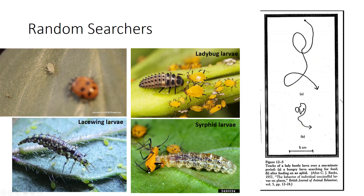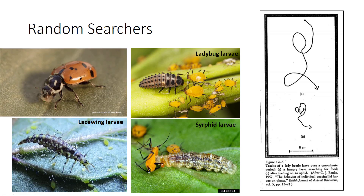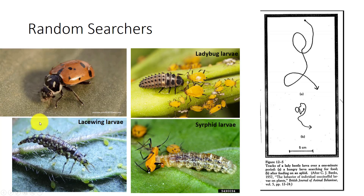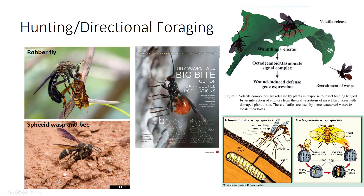Random searchers are the most common type of insect predator. Examples include most coleopteran predators, coccinellids, syrphid larvae, and lacewings. Hunting or directional foraging differs from random searching by using sight or other stimuli to orient to prey from a distance. Many hunters initially identify prey items via vision. A species of wasp that preys upon bees will attack any flying object approximately the same size as a bee, but will only sting an actual bee, suggesting that tactile stimuli are used at close range.